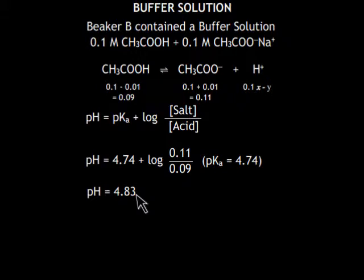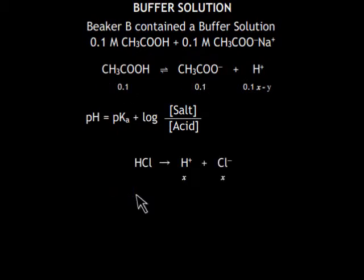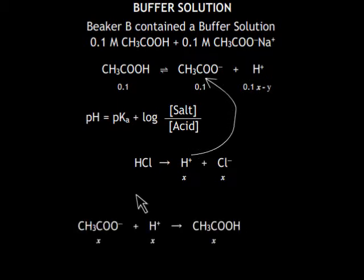Now you know why pH of the buffer has not increased much. If we add HCl to the buffer instead of NaOH then what will happen? The added H plus ions will react with the acetate ions to form undissociated acid. In this case the acid concentration will increase and the salt concentration will reduce, which is just opposite to what happened when we added NaOH.